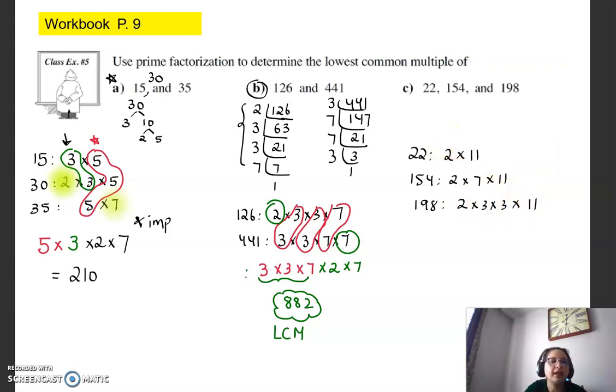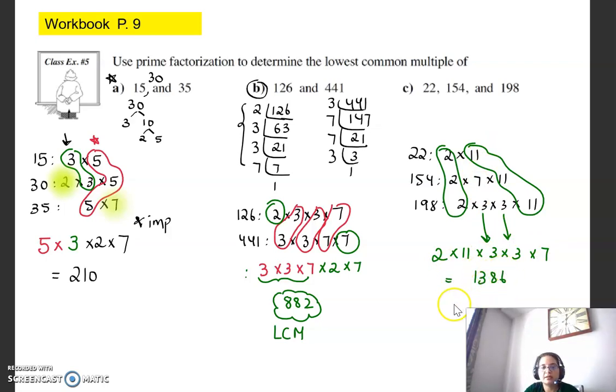Again, look for something that is common in all three, and that's the 2 and the 11. And something else that is repeating maybe in just two of them? Nope. But don't think this is repeating here because this is only in 198. So I call repeating if it is in common in other numbers. So you do have to include both of these threes because they do not repeat in other numbers. And then that's 7. So multiply all of these and you get 1386.